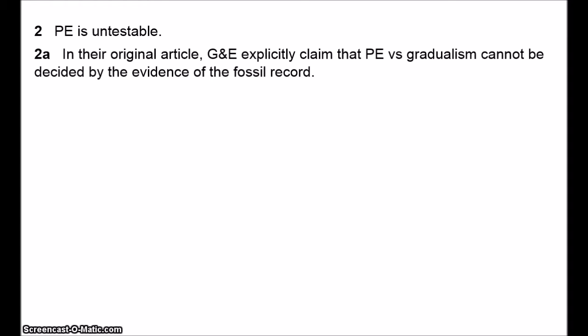They say explicitly: 'the data of paleontology cannot decide which picture is more accurate.' Their whole case in the first paper rests on the claim that punctuated equilibrium accords much better with the standard account of speciation — that's why we should adopt the theory. But they concede we can't actually demonstrate it by appealing to the fossil record.